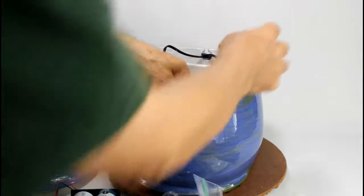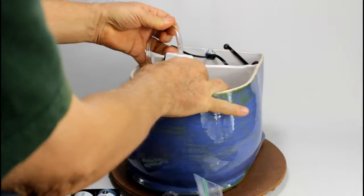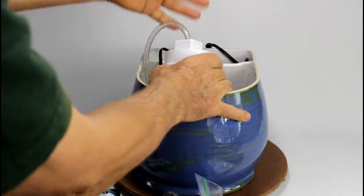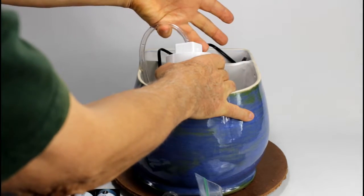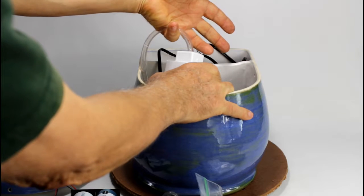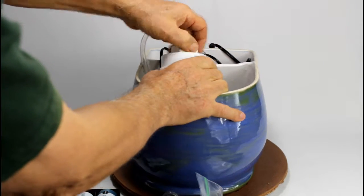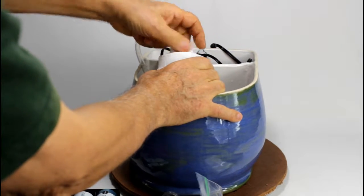So, to change the filter, you can just lift the filter housing up, hold it here, hold the tubing here with your little finger, with your pinky, and then screw the lid up.